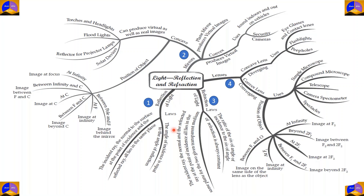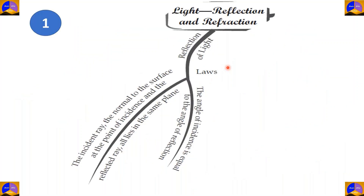Mind maps are a great way to organize your stuff, so whenever you want to study something you can always refer to a mind map as a last minute revision. In this mind map we'll be looking at the reflection of light first, then the two laws of reflection, then three types of mirrors — plane, convex, and concave. After that we'll move on to refraction of light and its two laws, and finally convex and concave lenses.